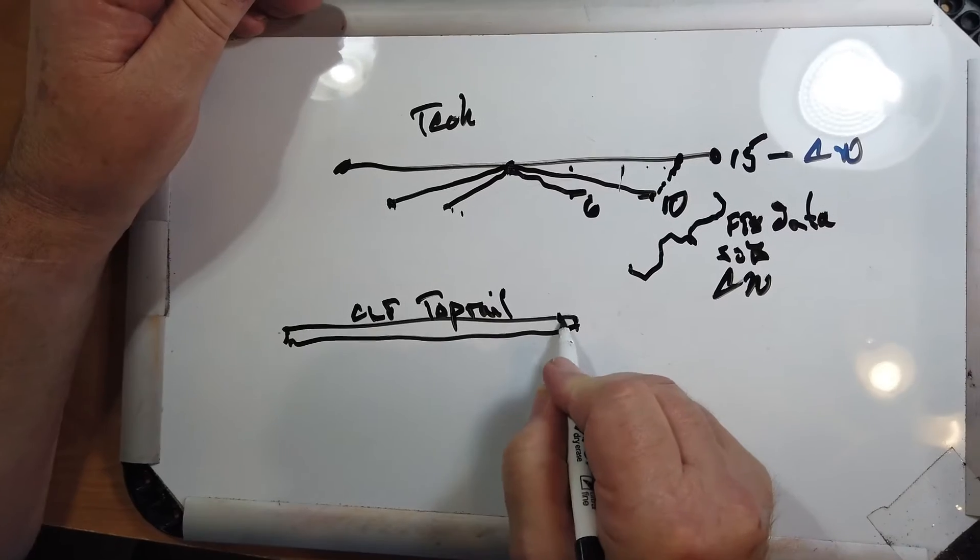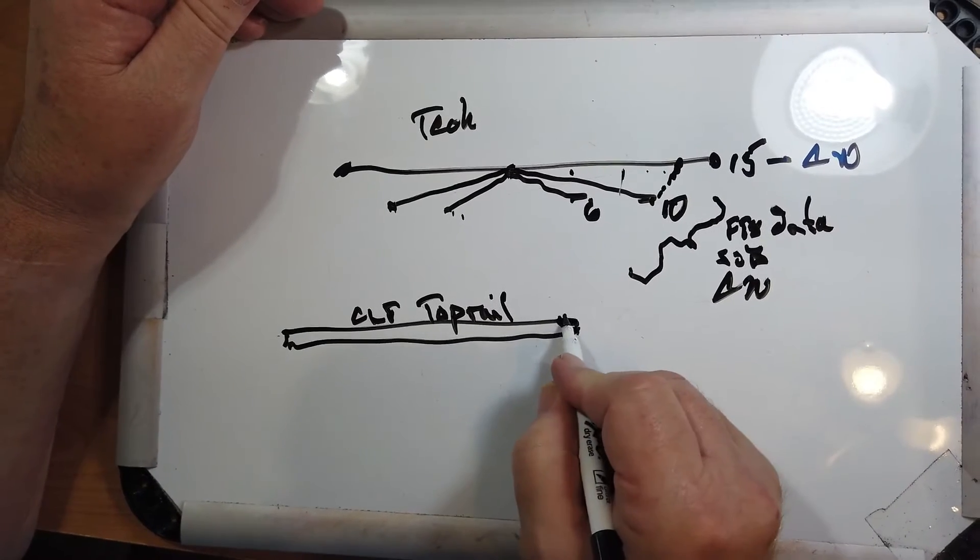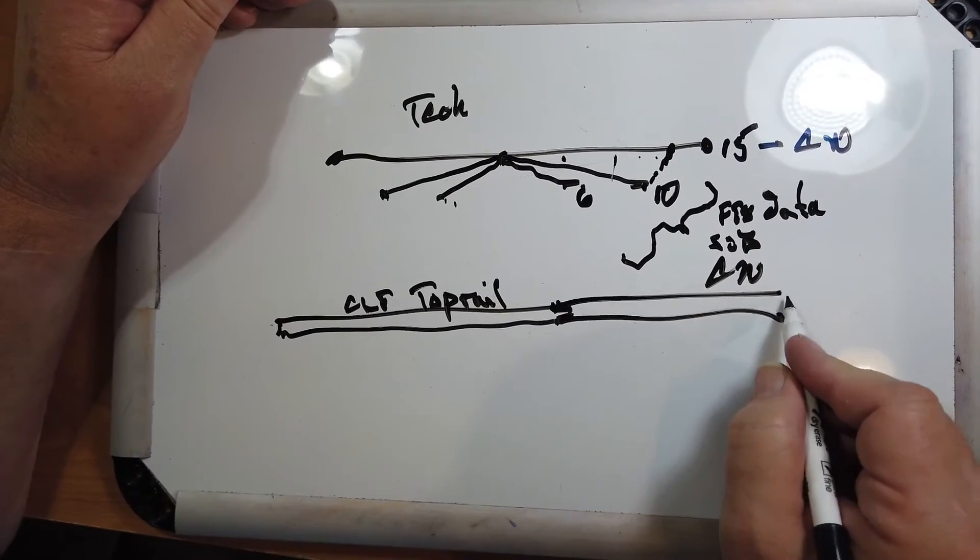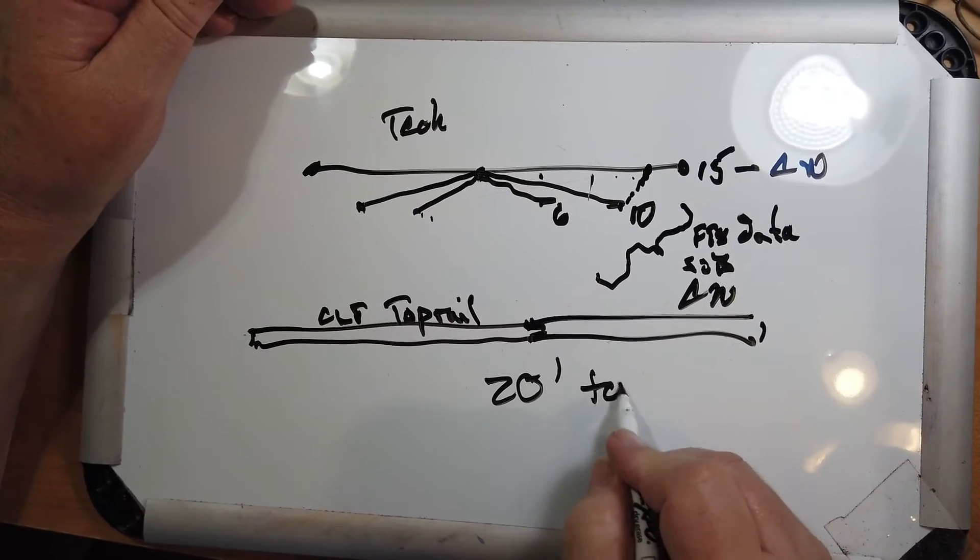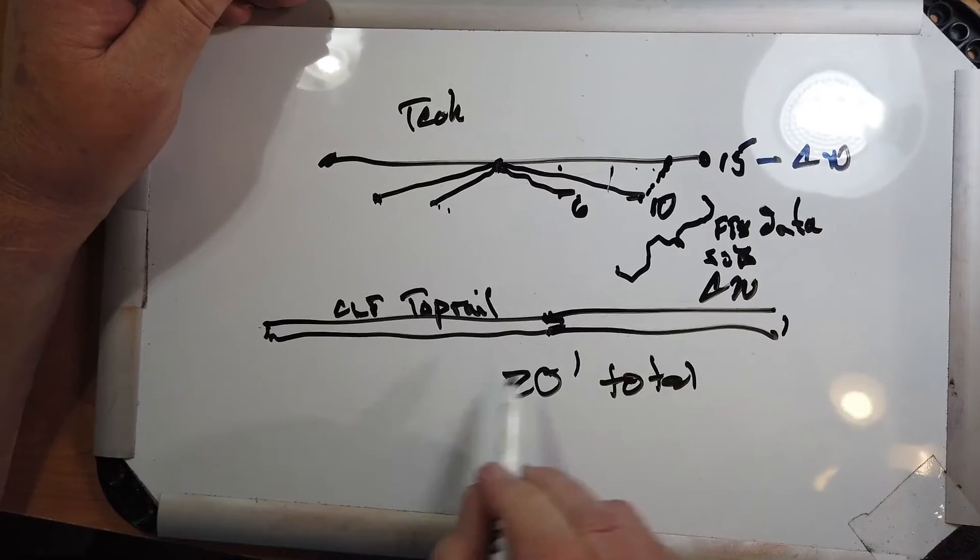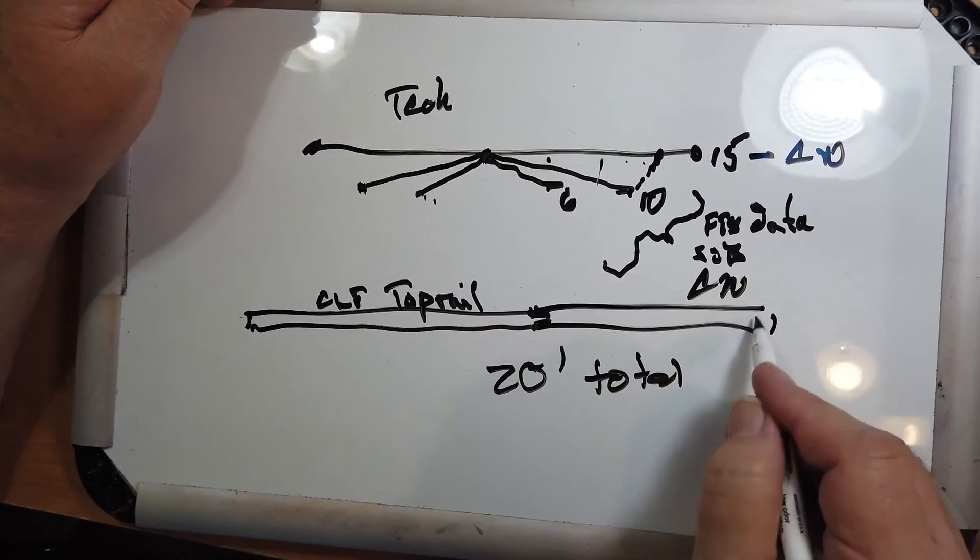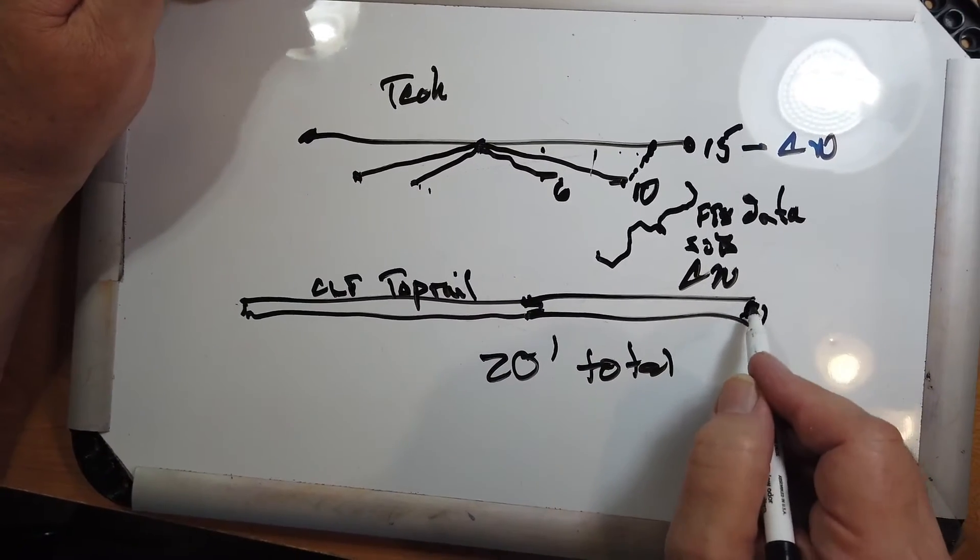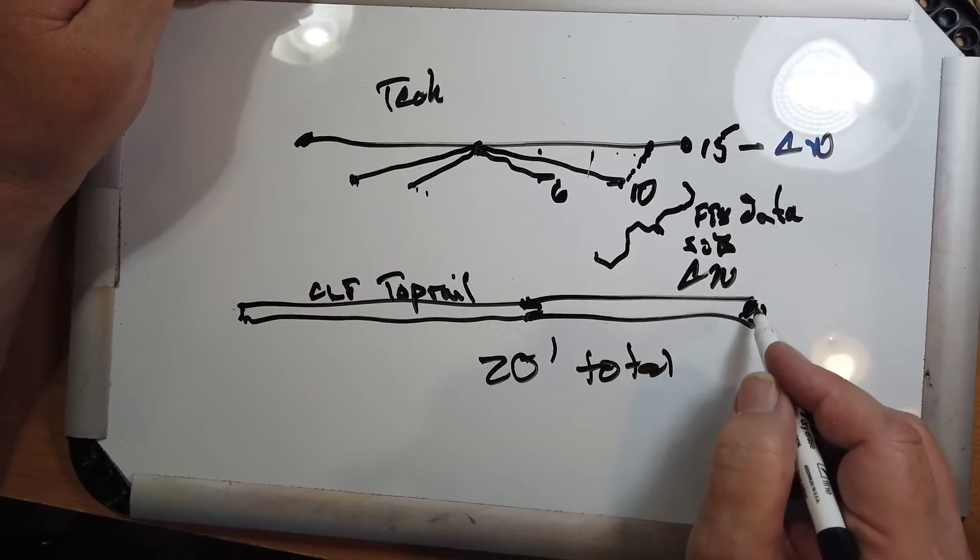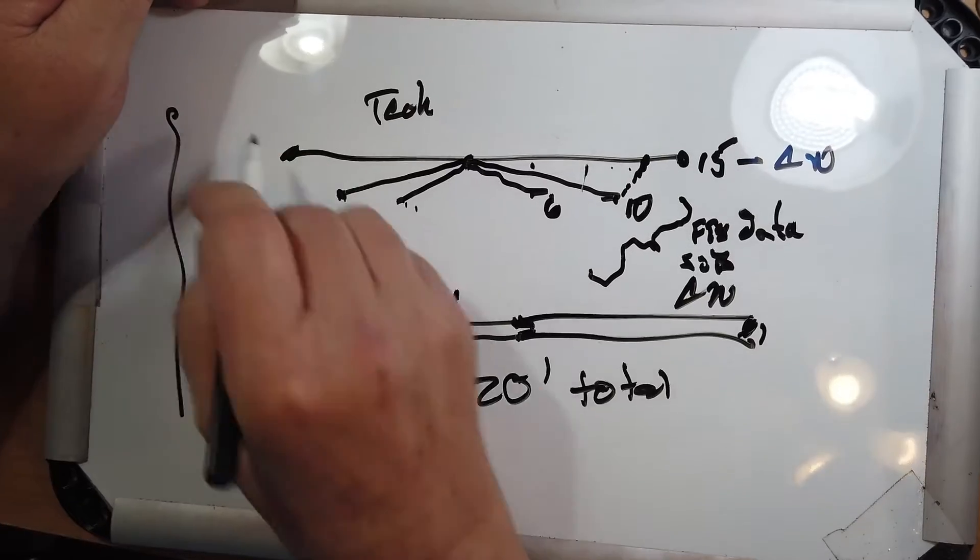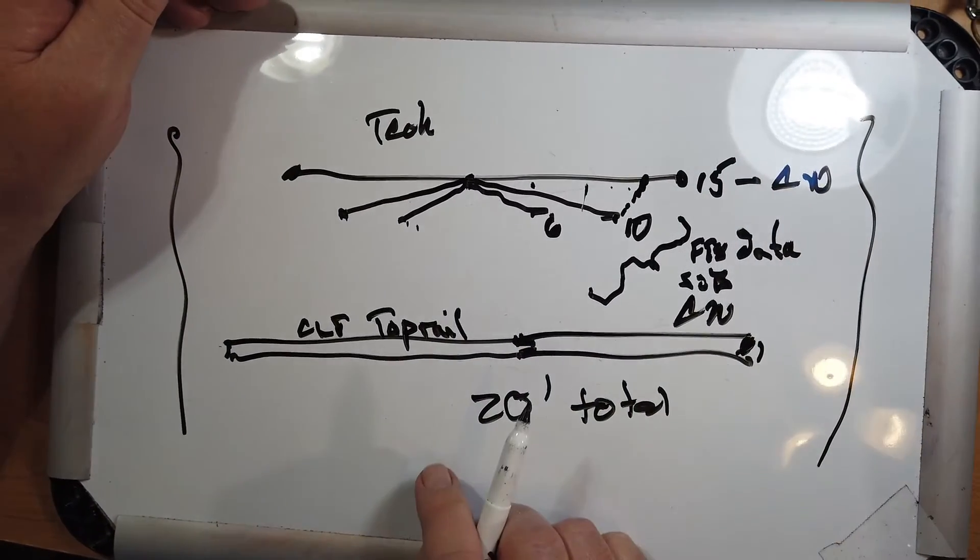Now, these have an end that's slightly tapered, so they fit right into the next one. If you get two lengths of that for 20 feet total, you can put these up, guide them at the top with parachute cord or whatever, something that's got some UV resistance, and put them up, and then put the antenna between them.